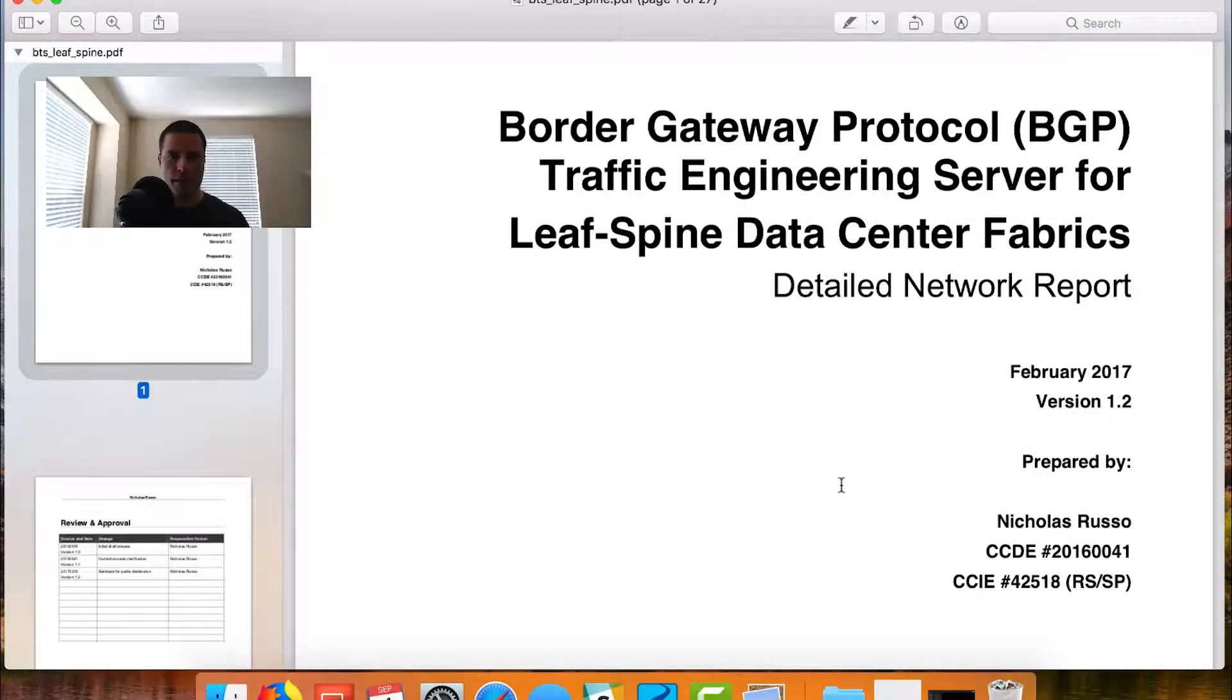Welcome back, everyone. Nick Russo here. In this next video, we're going to look at an original research document I wrote a few years ago about using BGP in a leaf-spine data center to optimize the flow of traffic. So dealing with elephant flows and load sharing and other kinds of things like that without using any kind of tunnels or overlays or anything crazy. We want to see, can we just do this with BGP and IGP?